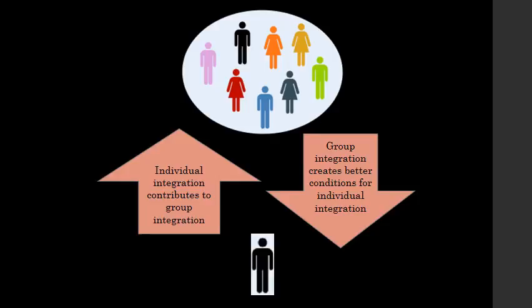So the relationship between individual integration and group or political integration is not a necessary one in that sense. Nevertheless, there's a similarity in structure, and each provides a condition for the other. Individual integration contributes to group integration by making it more likely that the group as a whole can become integrated. But it also works the other way around: group integration creates better conditions for individual integration, making it more likely that an individual will be able to reframe and reconsider the assumptions that create conflict within themselves, if the environment around them is conducive to doing that.